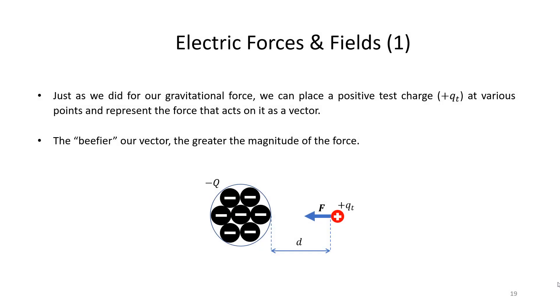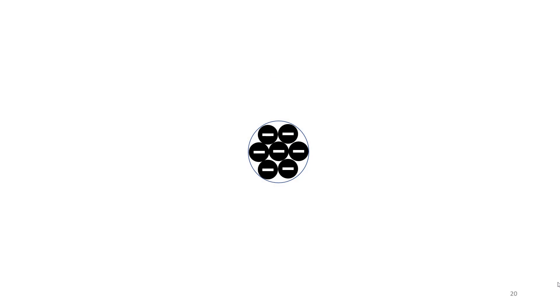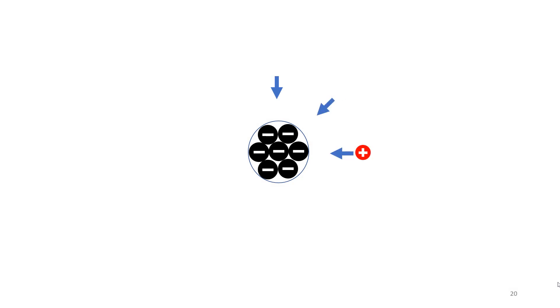However, we can also do exactly what we did for the gravitational case and look at the force that acts on the positive charge at different points in the space surrounding the negative bunch. So again, we are placing the positive charge at different points in the space surrounding the negative charge and we are using vectors to indicate the magnitude and direction of the force at the various points acting on our positive test charge.